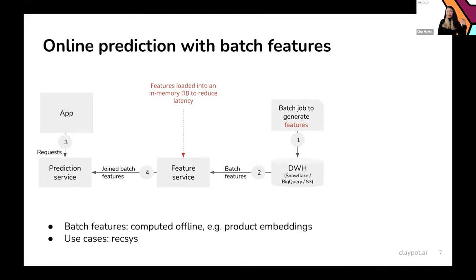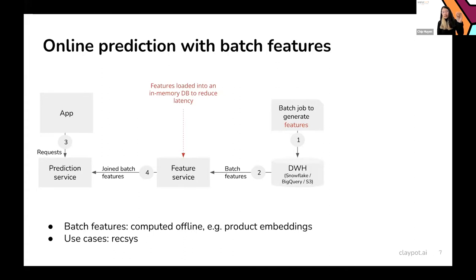With online predictions, there are two different types. The first is online predictions with batch features. Batch features are computed offline — for example, product embeddings. For session-based recommender systems, you might look at all the products a user has seen in the last half-hour, get the embeddings for those items, add them together to create a feature embedding, and then generate recommended items. These embeddings are computed beforehand and loaded into a key-value store to reduce latency at prediction time.